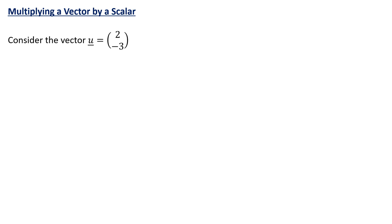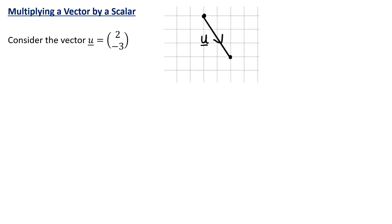So let's think about the vector u. The vector u is (2, -3). So the vector u is 2 along, 3 down, and we've got the arrow showing the direction that we've travelled.